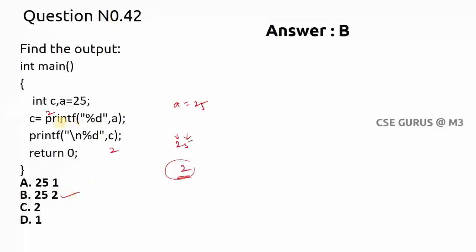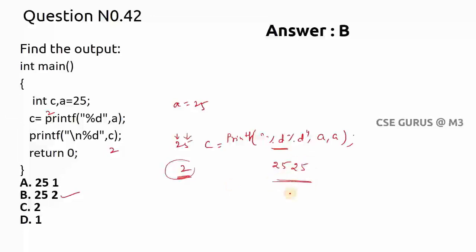If you write another statement like printf("%d%d", a, a), what is the c value then? First %d gives 25, second %d gives 25 — so totally 4 symbols. And if you add \n, that counts as 1, so totally 4 plus 1, your c value will become 5. This is how assigning a printf statement to a variable works.